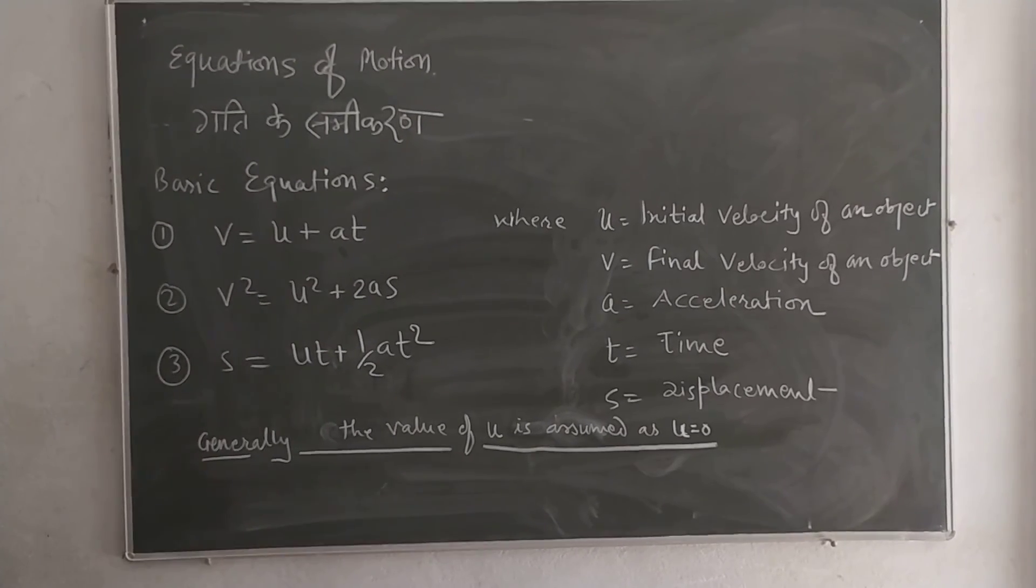When displacement comes in, time automatically comes into it. In the third equation, displacement s = ut + ½at².